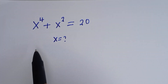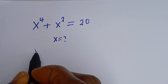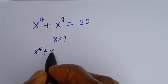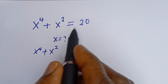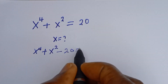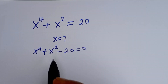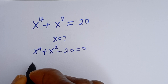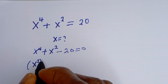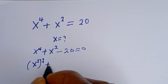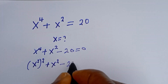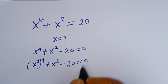Here we have s to the power of 4 plus s squared. If we take the 20 to this side, it becomes s to the power of 4 plus s squared minus 20 is equal to 0. Then s to the power of 4 can be written as s squared squared.